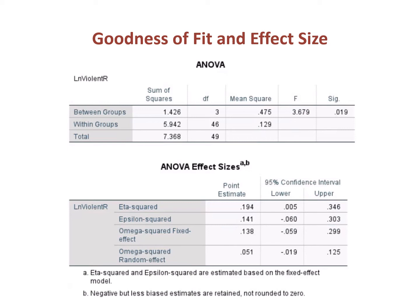Now let's look at the ANOVA Effect Sizes table. You'll notice there are four statistics placed there. The preference right now, overwhelmingly, is to use Eta squared. Under the point estimate, the Eta squared is 0.194. So this one-way ANOVA has an Eta squared of 0.194, and we also get the 95% confidence interval. With effect sizes, we don't always use the p-value — we go to the F ratio for statistical significance of the ANOVA fit, but we can report the effect size alongside that. It is good to double-check the 95% confidence interval to make sure that zero does not fall into the range; otherwise, we have a complication.